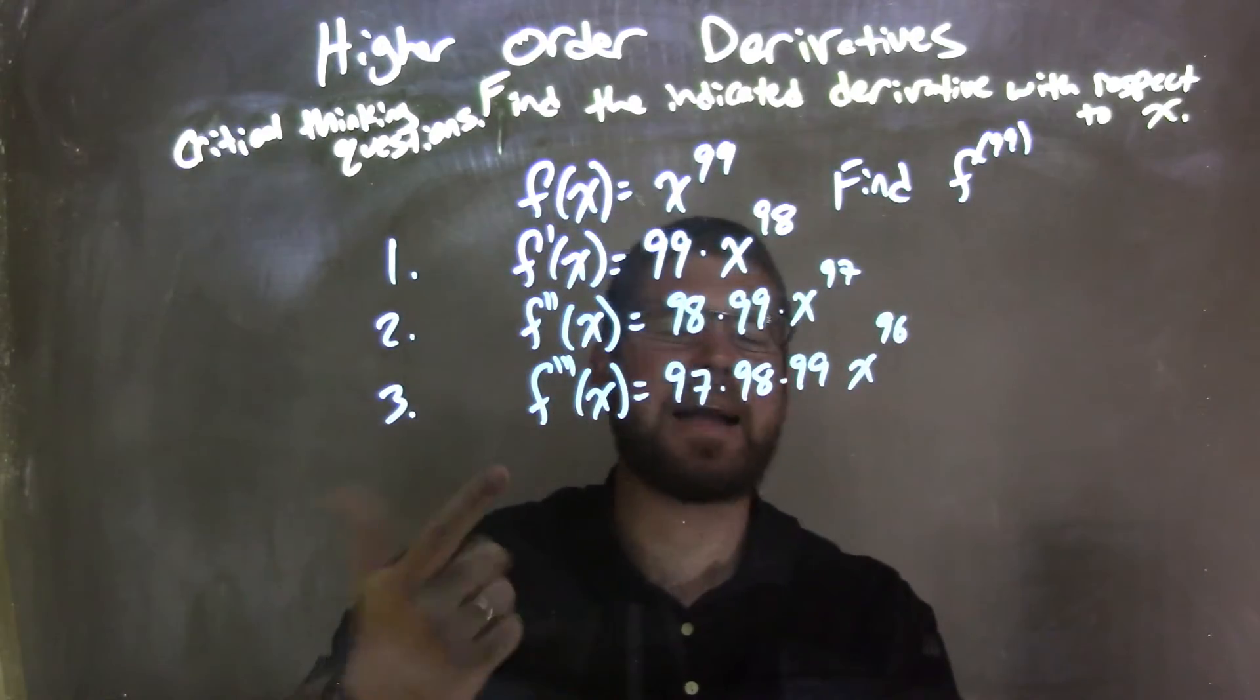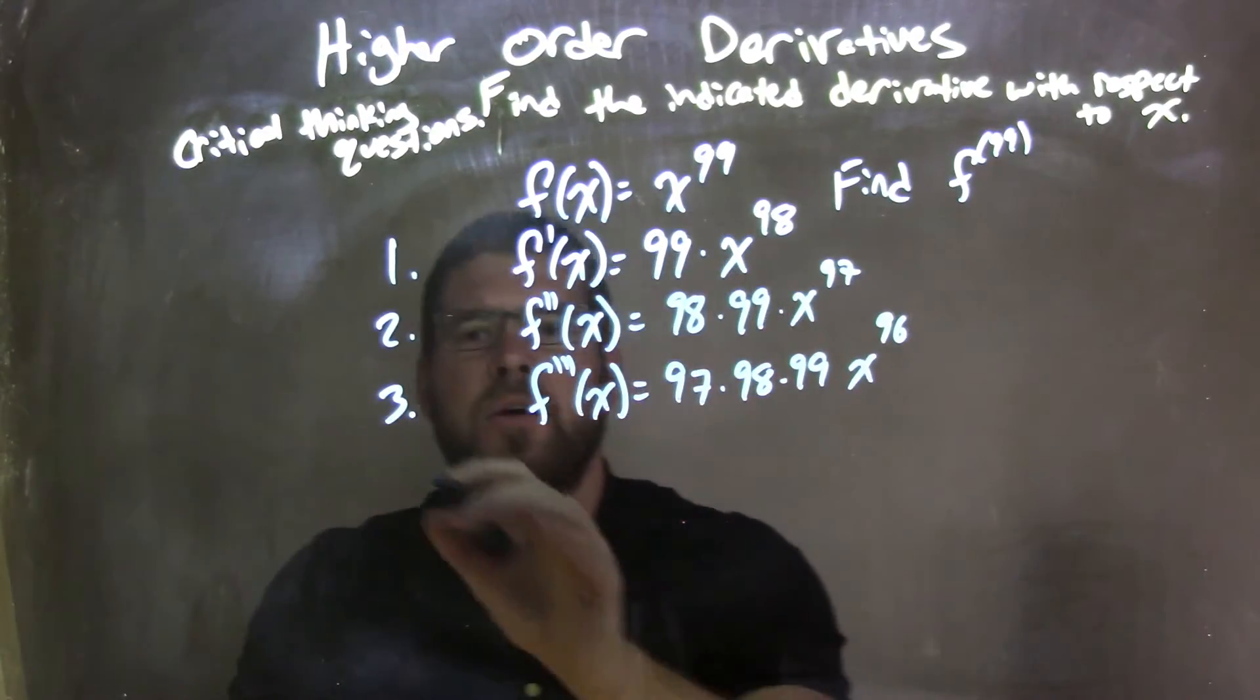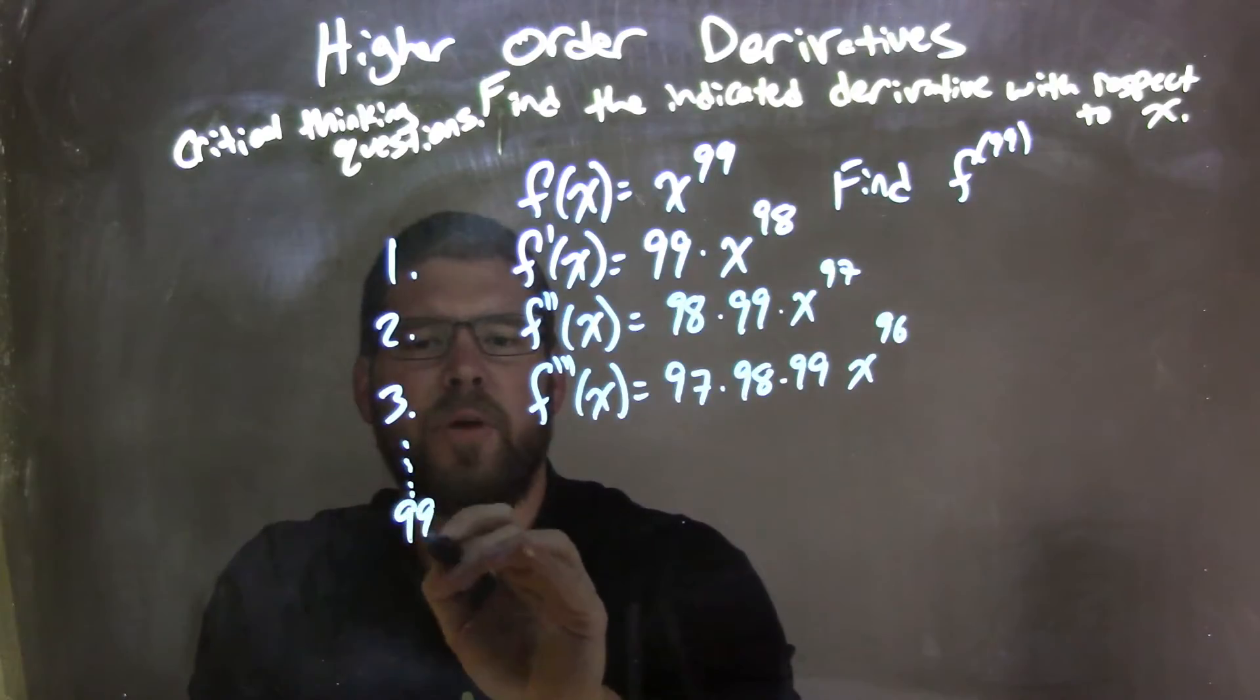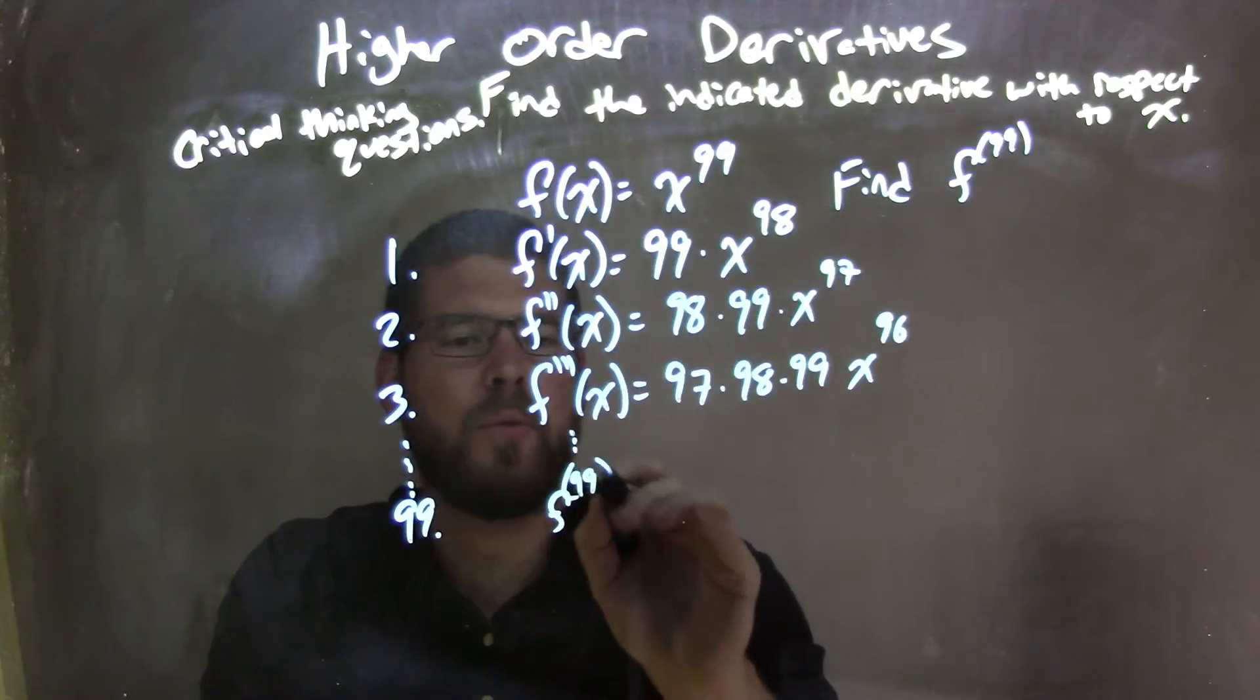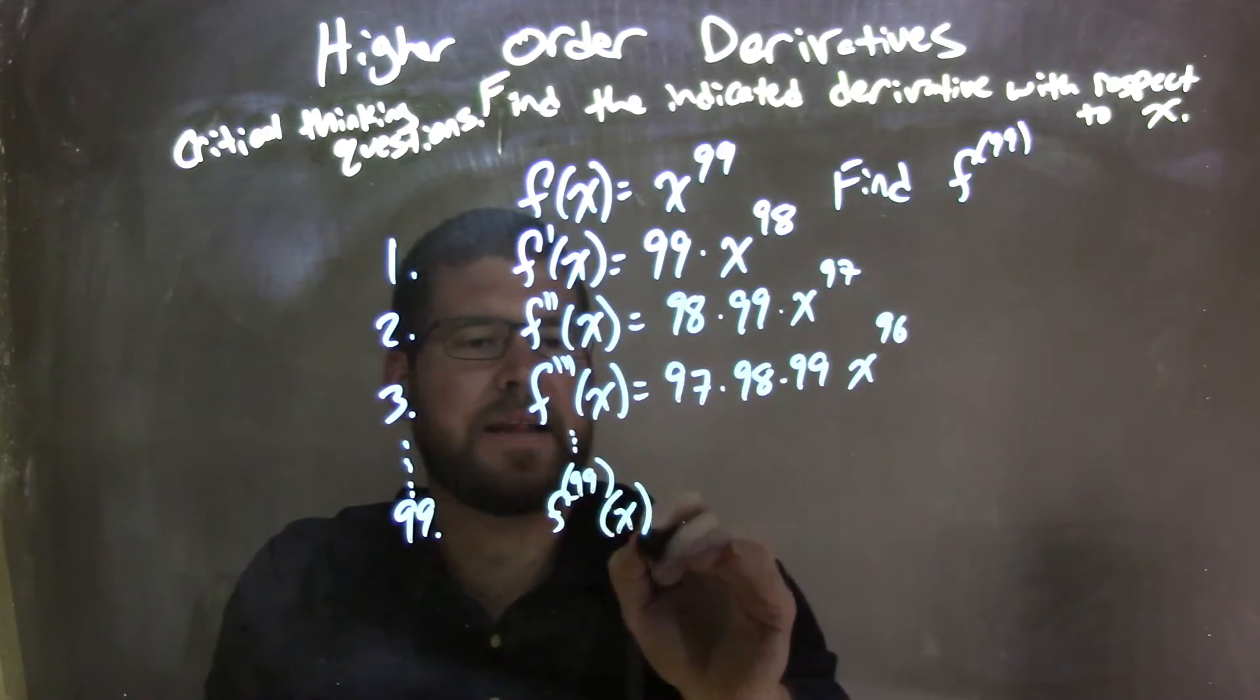What would happen if we did the 99th derivative? So we went down to the 99th one, f to the 99th derivative, what would we have? See if we can predict this.